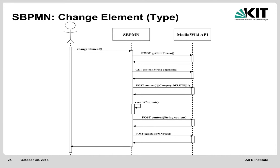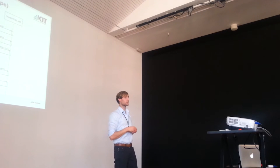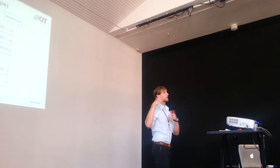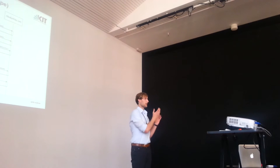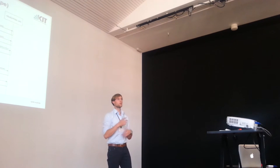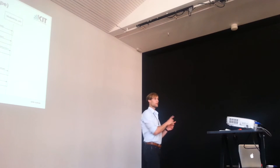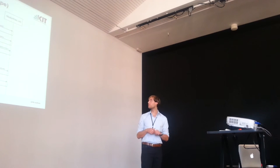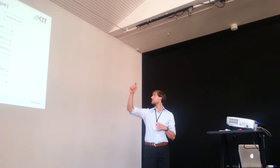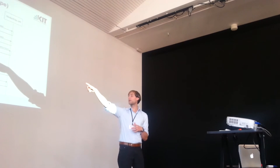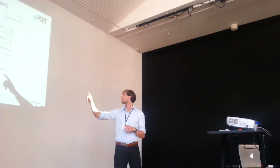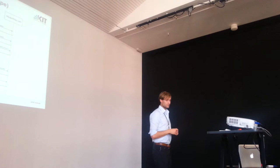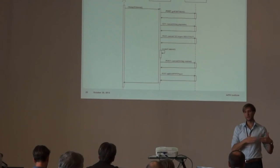We get the edit token, get the content from the page we want to change, and delete the page, because the page name was originally something like 'Exclusive Gateway' followed by a unique ID. By changing it from, for example, an exclusive gateway to an inclusive gateway, we use the same ID. That's why we create a new page with the corresponding self-describing ID, get the content from the old element, create a new page, and also update the BPMN process page.